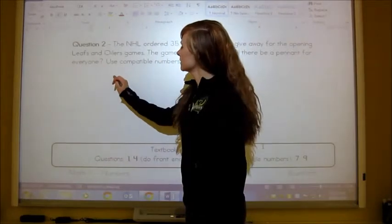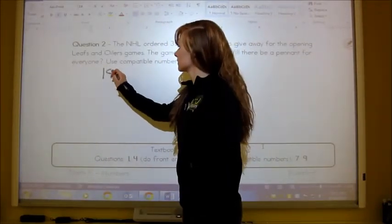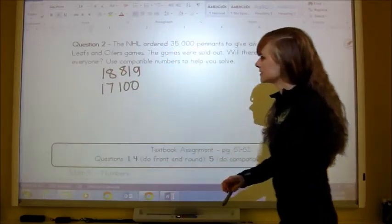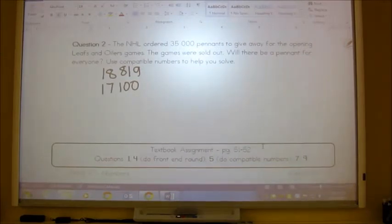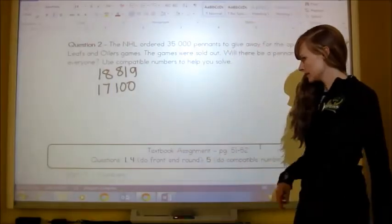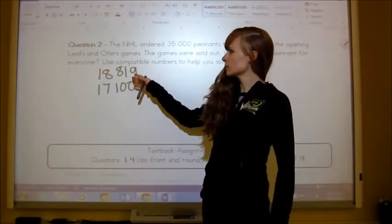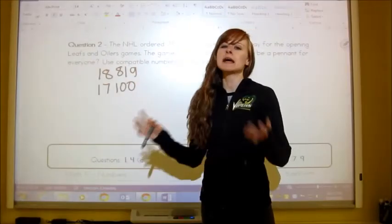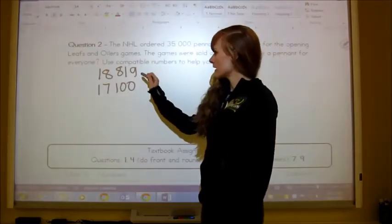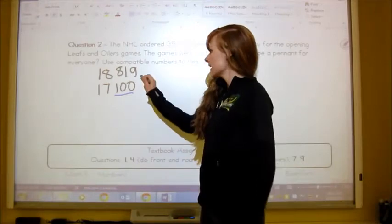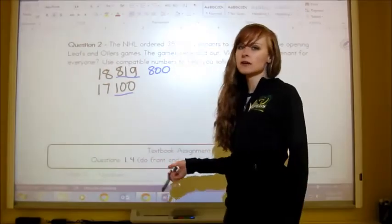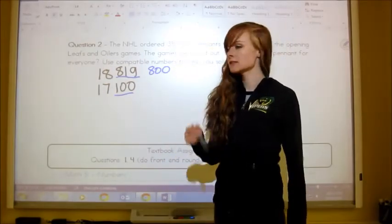Our numbers are 18,819 and 17,100. We're supposed to use compatible numbers to help us solve. That's looking at the smaller numbers and seeing if there's a way to add those together easily in our head. And I do see a way to do that. This is already 100. So I'm just going to leave it. And then I'm going to turn this 819 into just 800 because 819 is closer to 800 than it is to 900.